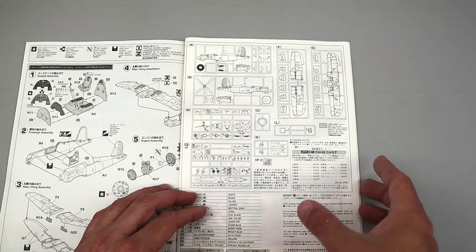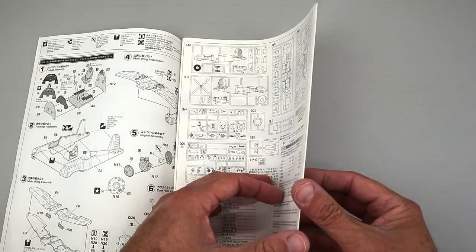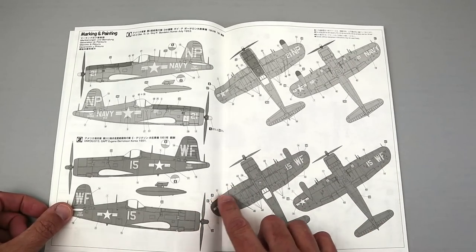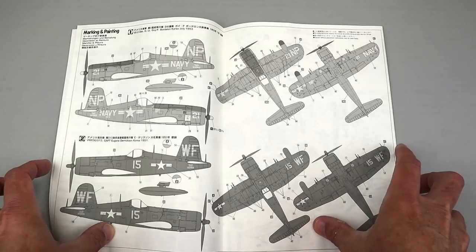This particular boxing included markings for the U.S. and Marine Service aircraft, so to build the Argentinian version, I was going to have to source some aftermarket markings or make my own.